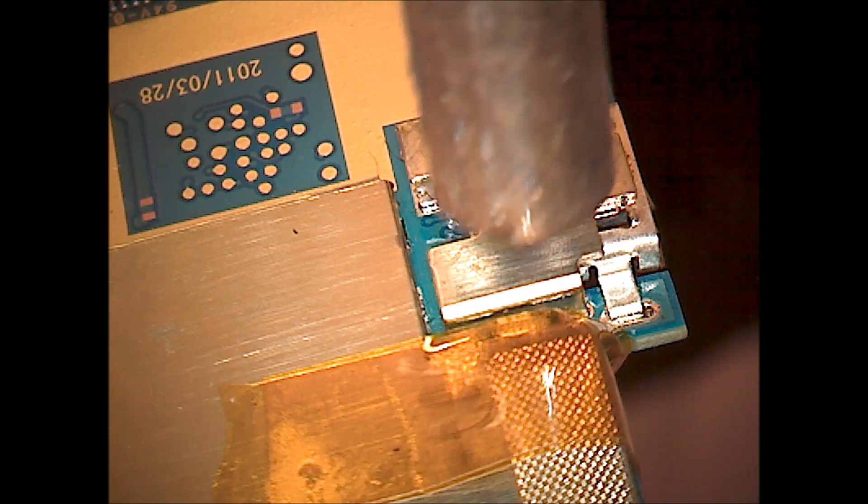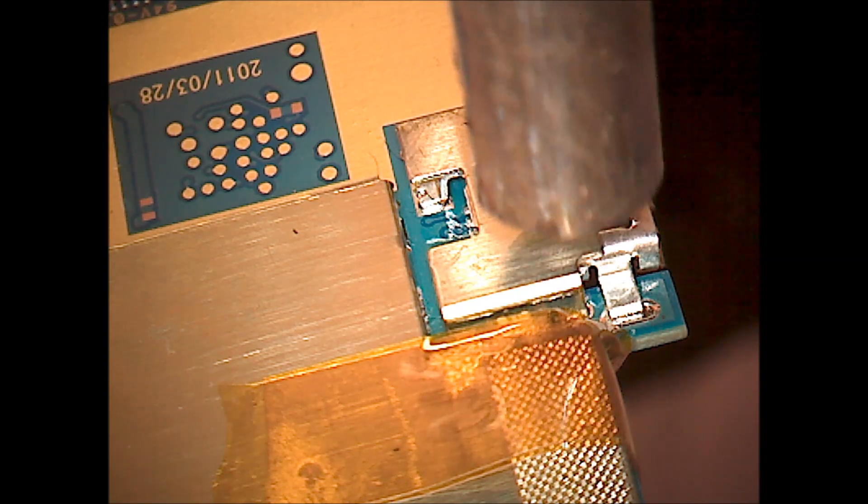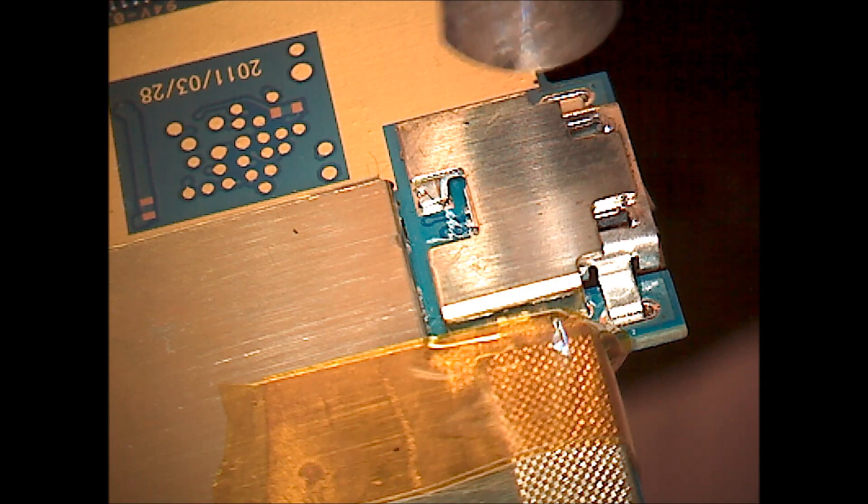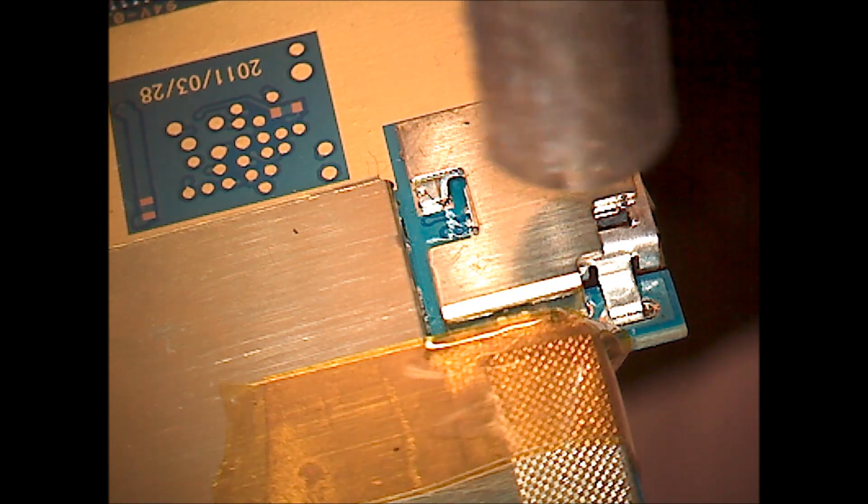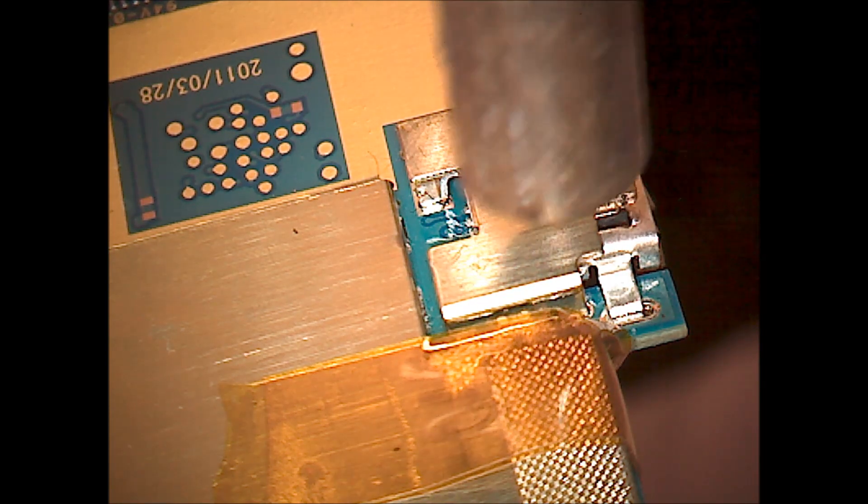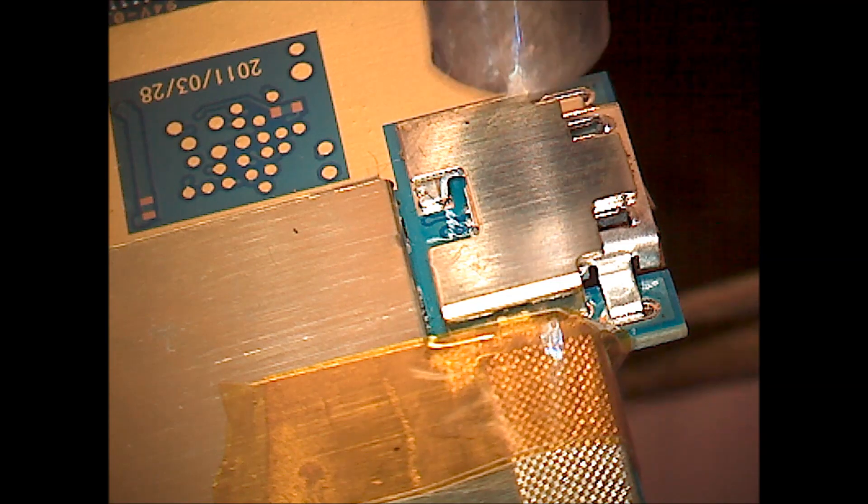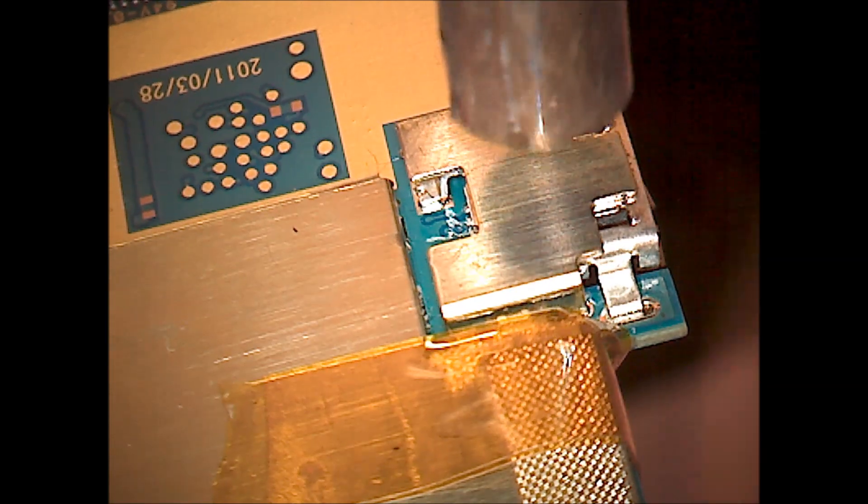As you can see on the bottom part of the board there, there is some kind of transparent tape there, and what that is is Kapton tape. It protects the part of the board there right next to the charging port from getting too hot. It's heat-resistant tape.